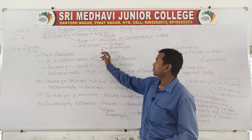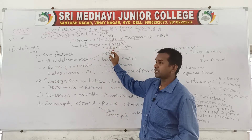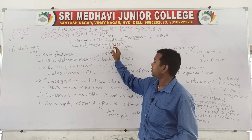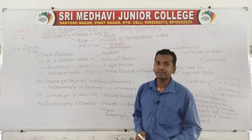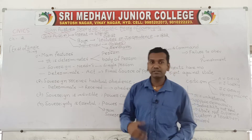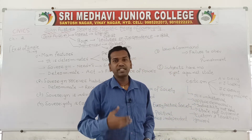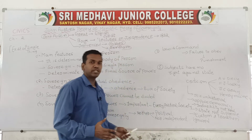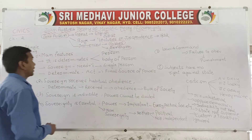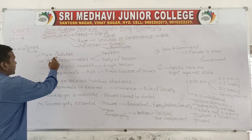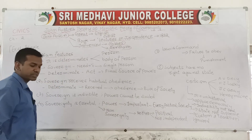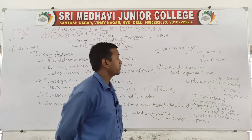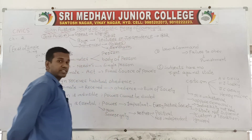Hobbes and Bentham were the two great people who were greatly influenced by John Austin's monistic theory of sovereignty. Now, what are the main features of his monistic sovereignty theory? We will study and discuss about them.